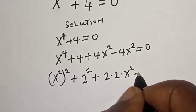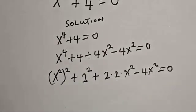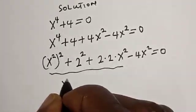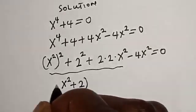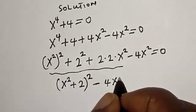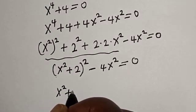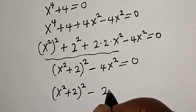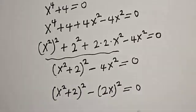Minus 4s² is equal to 0. Now if you look at this, all of this is (s² + 2)² minus 4s² is equal to 0. This can be written as (s² + 2)² minus (2s)² is equal to 0.